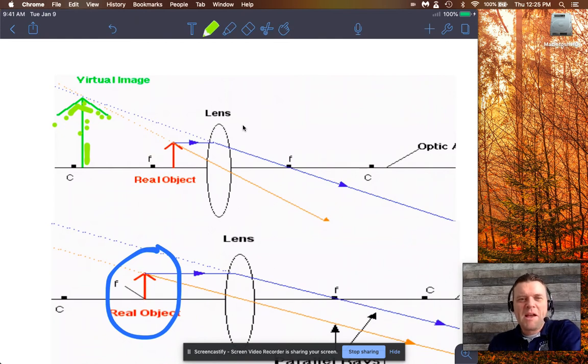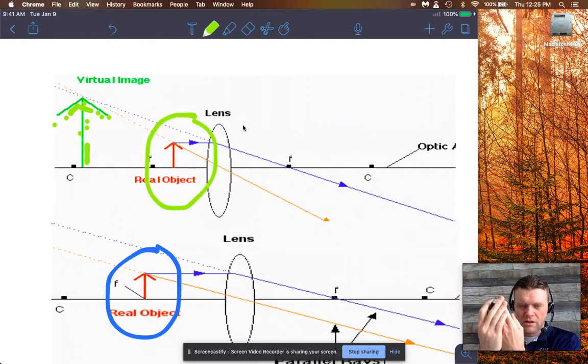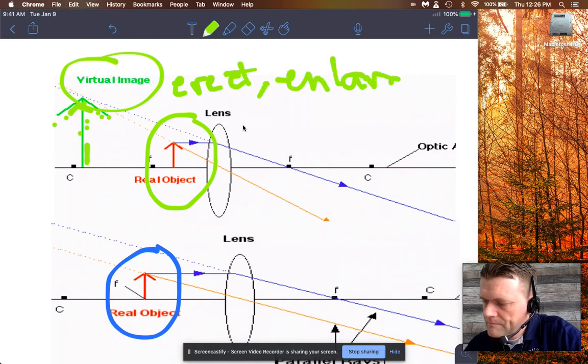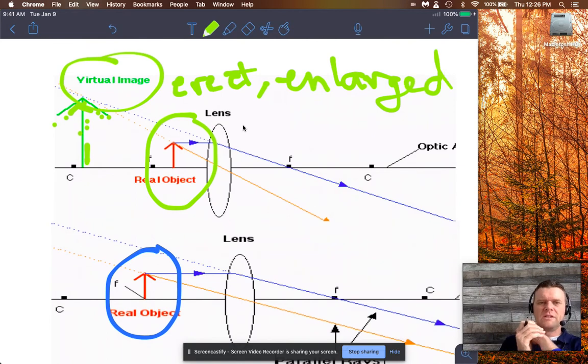The point is this is what a magnifying glass does. With a magnifying glass you bring an object inside the focal length. Like you get the magnifying glass close to the object. And what you see is a virtual image. You're seeing the object but magnified dramatically. And so in this case, the image is virtual, but it's upright or erect, and it's enlarged. So the point is that the image flips. So you get inside the focal length and everything flips. So it stops being a real image. It's now a virtual image, and it's no longer upside down. Now it's right side up, and it's also enlarged in this case.